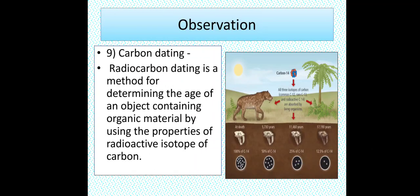9. Carbon dating. Radiocarbon dating is a method for determining the age of an object containing organic material by using the properties of radioactive isotope of carbon.